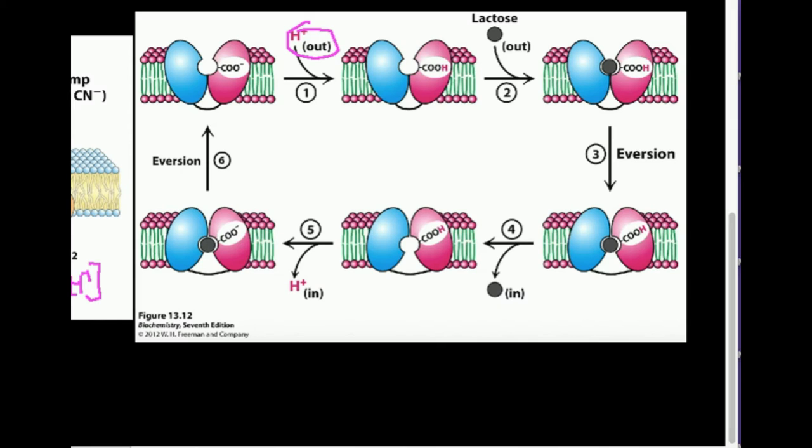Now notice that there's a carboxyl group that's deprotonated before the proton moves in. When the proton moves in, that carboxyl becomes protonated. And that protonation of the carboxyl is going to allow this lactose to move into that pocket as well. And the lactose can only move in once that carboxyl is protonated.